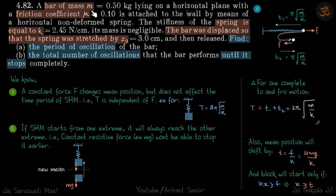We have a bar of mass m lying on a rough surface with friction coefficient mu. The mass is tied with a spring with spring coefficient k. The bar is displaced so that the spring is stretched by x naught and then released. We need to find the period of oscillation and the total number of oscillations until it stops completely.